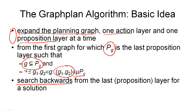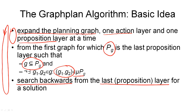That something else is a backward search in our planning graph. We start from our last proposition layer and search backwards towards layer P0 to try to extract a plan. This search can fail, meaning we haven't found a solution plan in our planning graph. In that case, we go back and continue to expand the planning graph — adding another action and proposition layer — and then search backwards again in our graph that now contains those additional two layers, and so on until we find a solution plan.